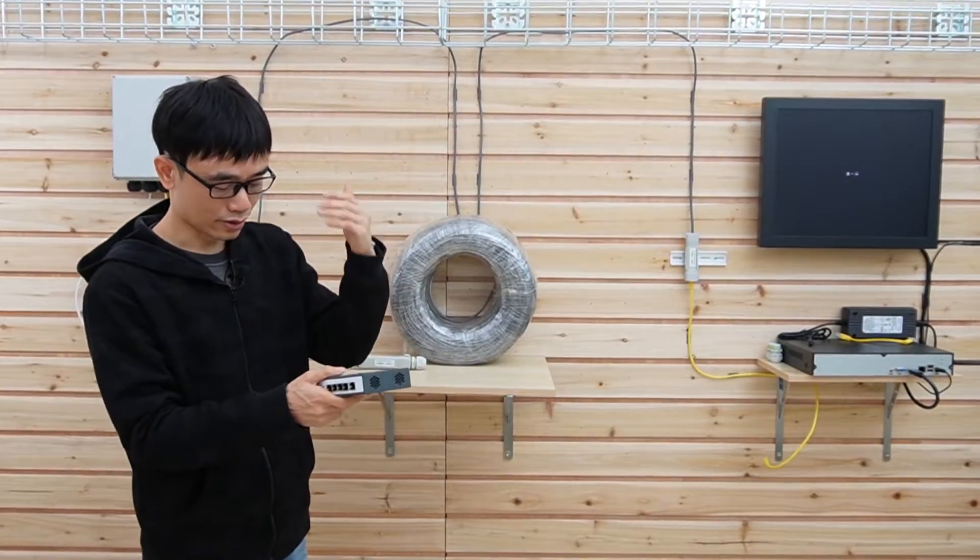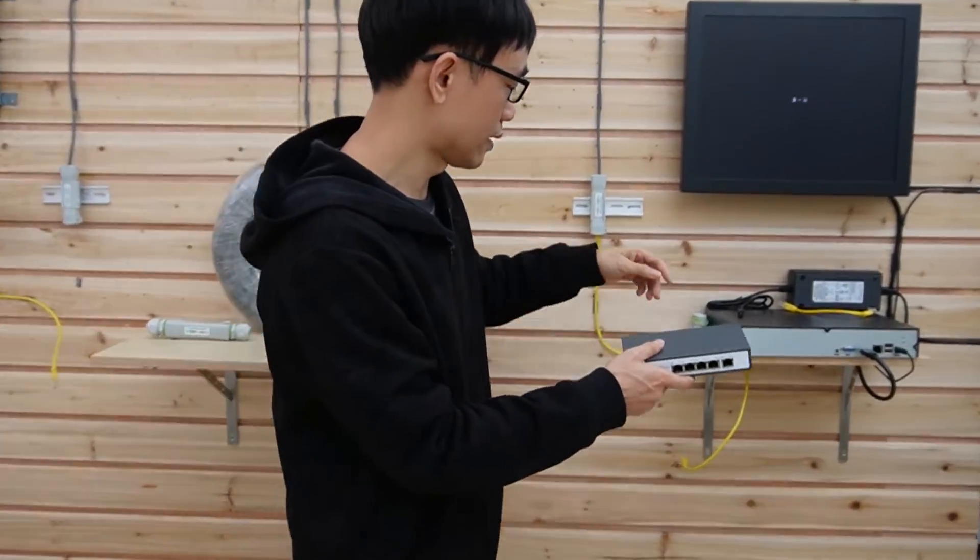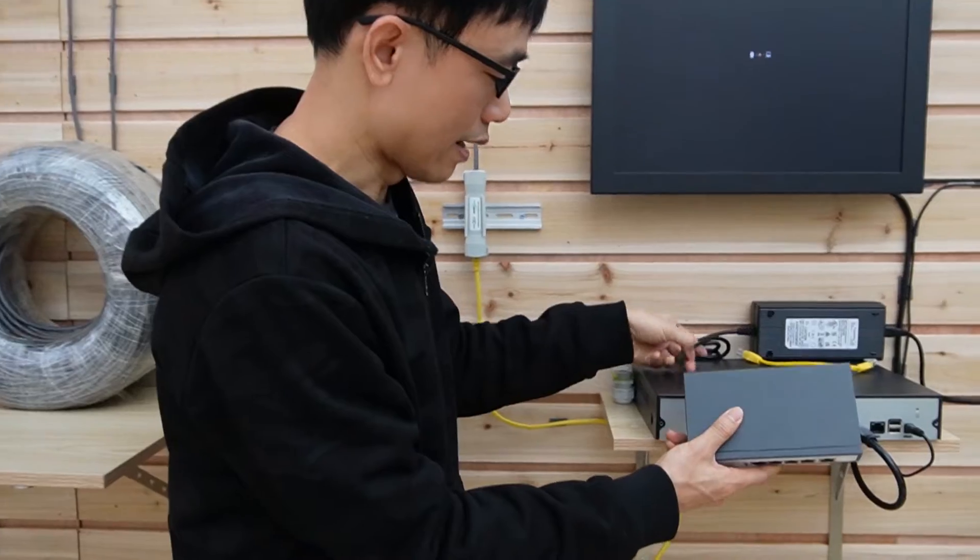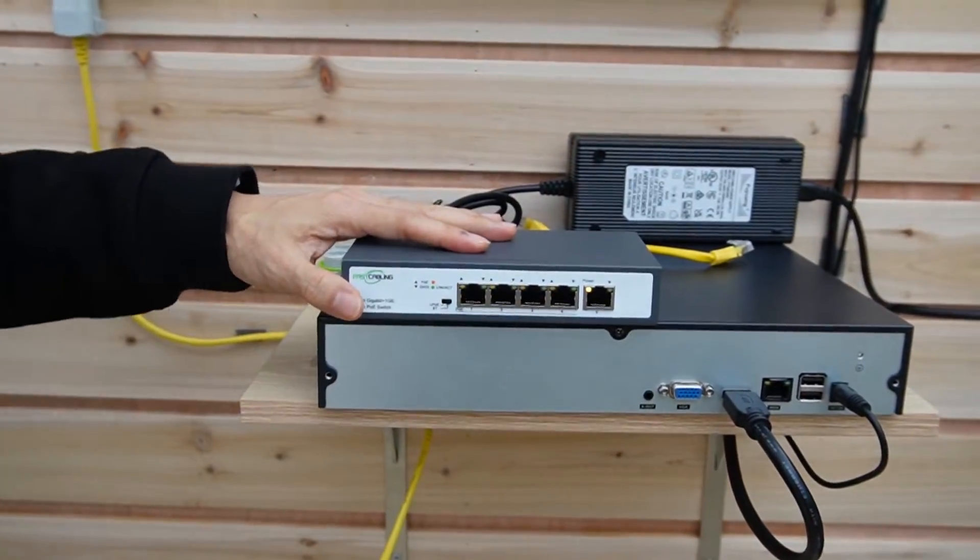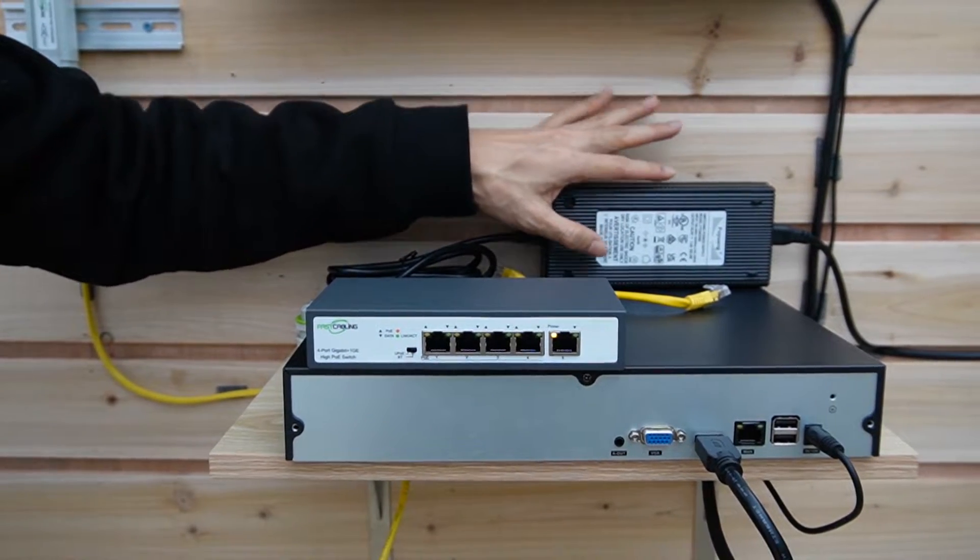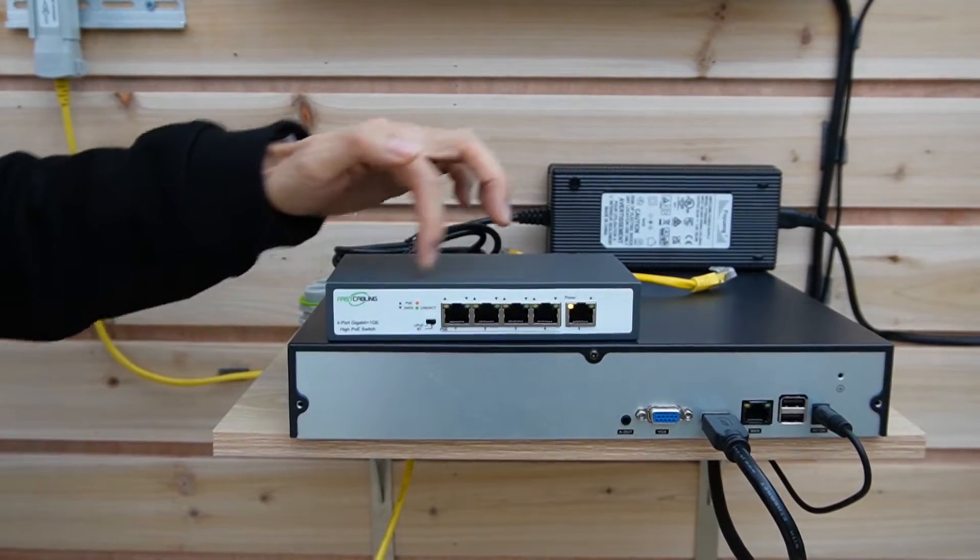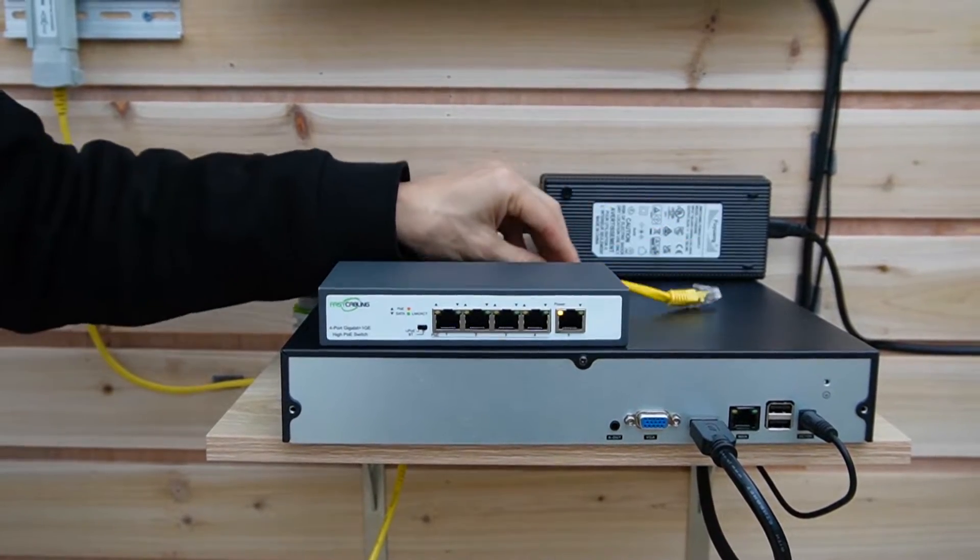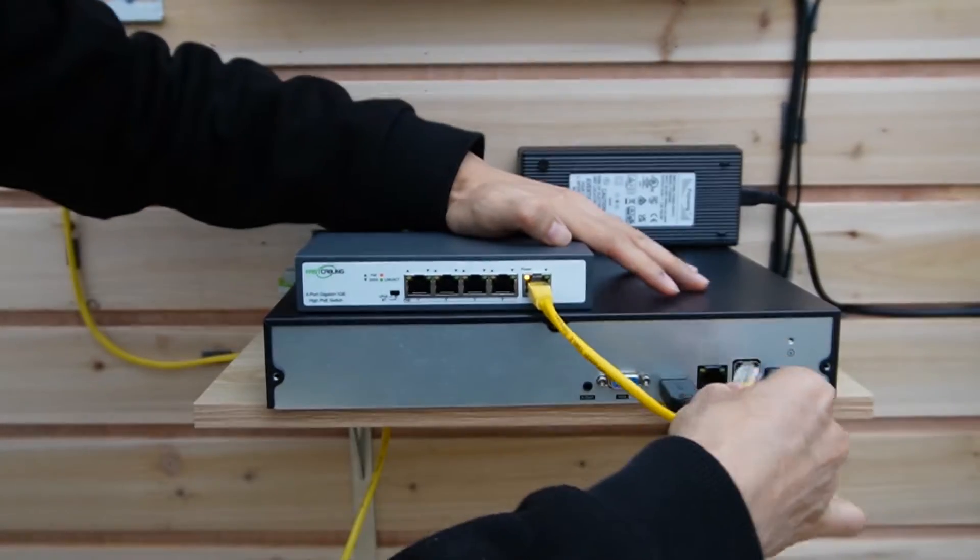Okay, now let me just connect this 90-watt PoE switch back to the system. First I need to power this switch. The power source is not built in. This is the 180-watt power source. Now it is supplying the power for this PoE switch. The second thing is I need to connect this switch back to the network video recorder.